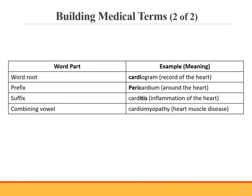Peri is the prefix in the term pericardium. Pericardium means around the heart. You can see here that the prefix is found at the beginning of the word. Itis is the suffix in the term carditis, which means inflammation of the heart. As this term shows, the suffix is found at the end of the word. Finally, the combining vowel is a vowel that links the word root to another word root or to a suffix. In most cases, the combining vowel is an O. In the term cardiomyopathy, there are two combining vowels: the first is between the word root cardi and the word root my, and the second is between the word root my and the suffix pathy. Cardiomyopathy is disease of the heart muscle.